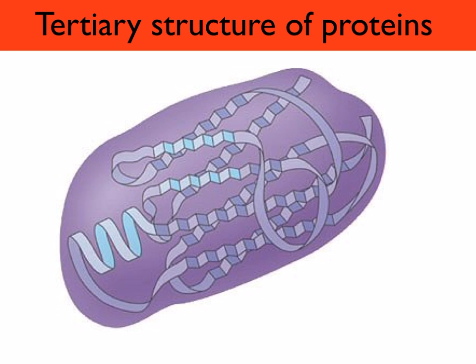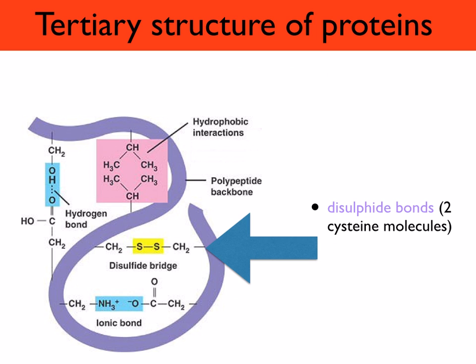The tertiary structure of proteins arises when the helices and beta-pleated sheets of the secondary structure are twisted and folded into an even more complex 3D shape. There are four different kinds of bonds present. The strongest are disulfide bridges, formed between the amino acid cysteine — they are covalent bonds and form very strong bonds, making the tertiary structure very stable.